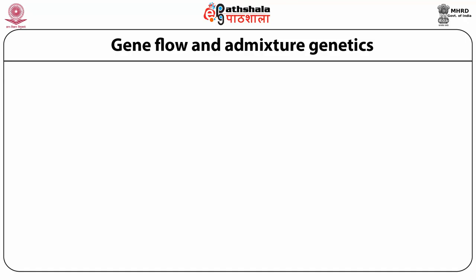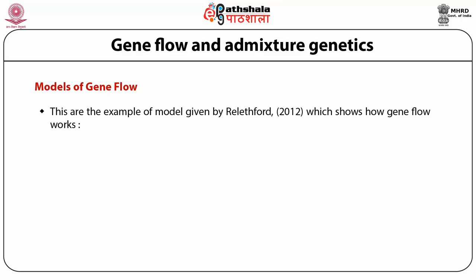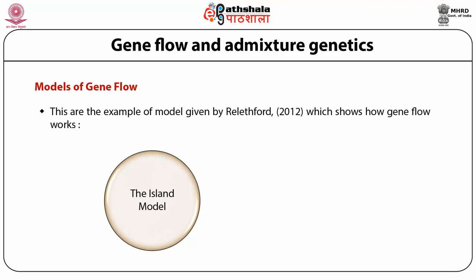To explain how gene flow takes place between populations, several models of gene flow have been proposed. Some of the models show how gene flow works in nature. The first one is the island model. The simplest place to start is to examine the case of one-way migration as shown in the island model, given by Wright. In this we can imagine an island that receives a certain amount of migration from the mainland, and we can see what effect gene flow from the mainland has on the allele frequency of the island.